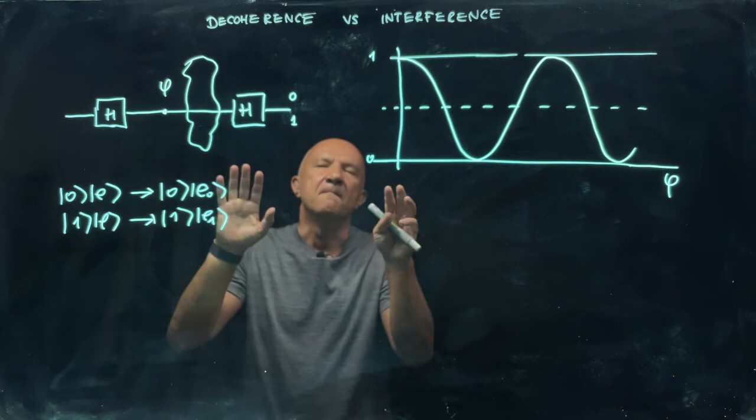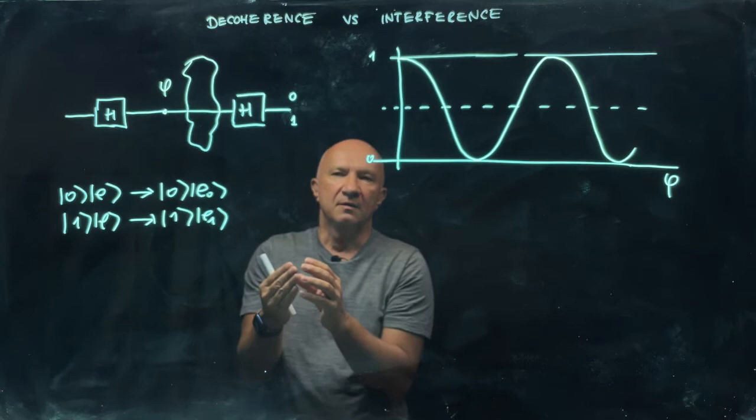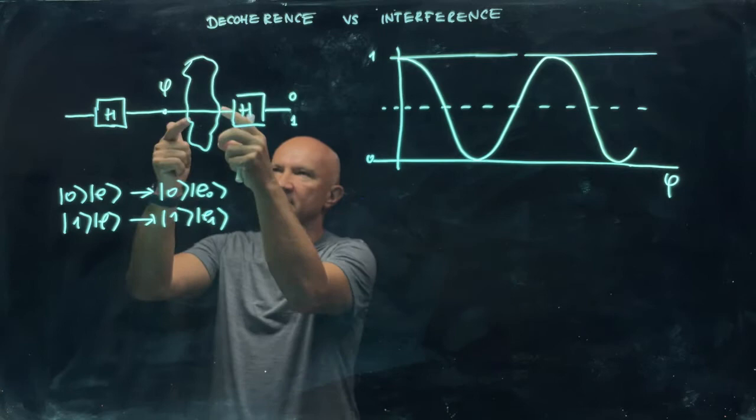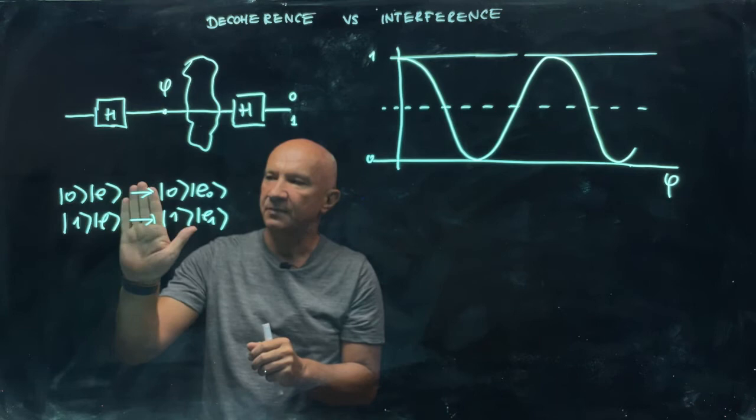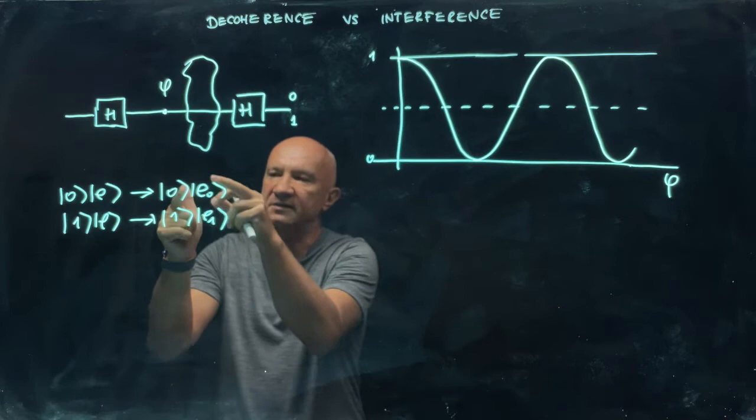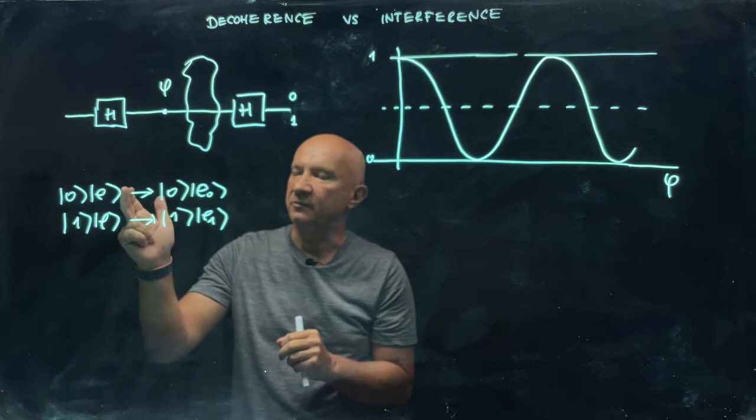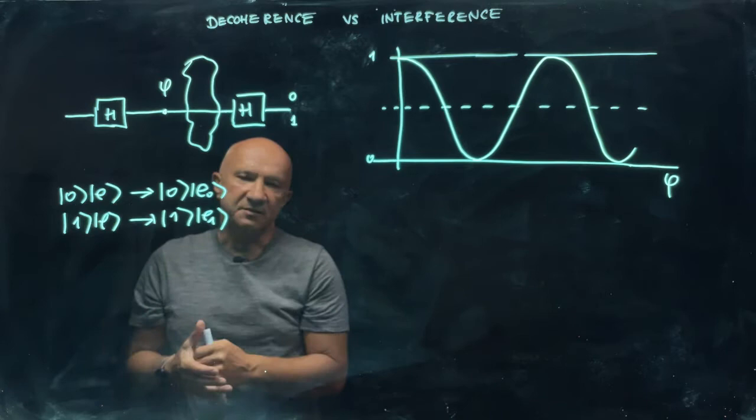And the interaction between the qubit and the environment is of the measurement kind of type. So the environment will try to measure the qubit in the computational basis. So the environment is trying to learn whether the qubit is in state zero or in state one when the qubit is in between the two Hadamard gates. As you can see, the interaction is of this type. Qubit in state zero, environment in some state E evolves into qubit still in state zero, but the environment learns something about the state of the qubit and evolves from the state E to state E0.